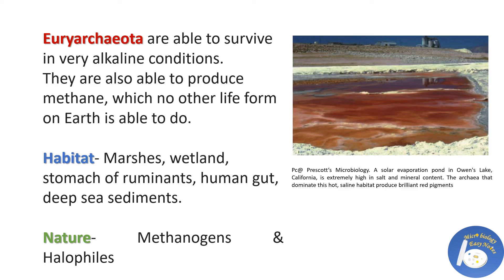Euryarchaeota are able to survive in very alkaline conditions. They are also able to produce methane, which no other life form on earth is able to do. Their habitats include marshes, wetlands, the stomach of ruminants, the human gut, and deep-sea sediments. Their nature is methanogenic, and they are also halophiles.